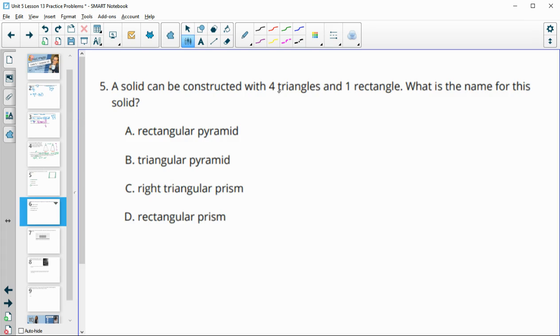Number five, a solid can be constructed with four triangles and one rectangle. What's the name of this solid? So if we only have one of one of the shapes, that has to be our base. So our base is a rectangle. Then all of the sides are making triangles. So we've got four triangles coming out of every side. So they're going to connect at a point and create a pyramid. The base shape of this pyramid is a rectangle, so it's a rectangular pyramid.